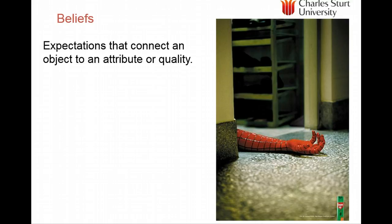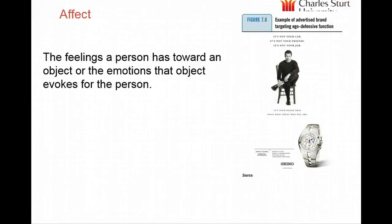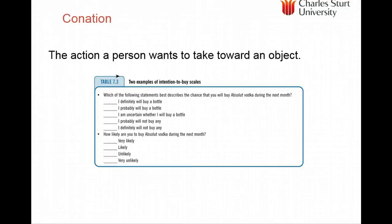For example, with Bagon, the belief is that this is a very powerful brand. You can form a broader brand belief, as with Nescafe Gold Blend and its rich aroma. Affect is the feeling towards an object — the emotion it involves for a person. This can be a very powerful source of attitudes, shown by advertisements linking a watch to feelings of identity. Conation is harder to show in advertising but is often measured by intention-to-buy scales.